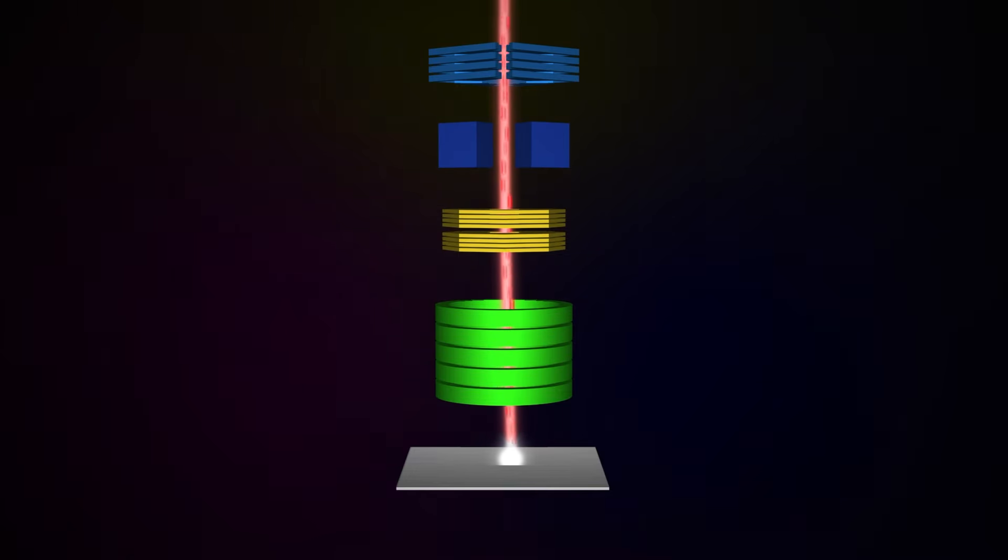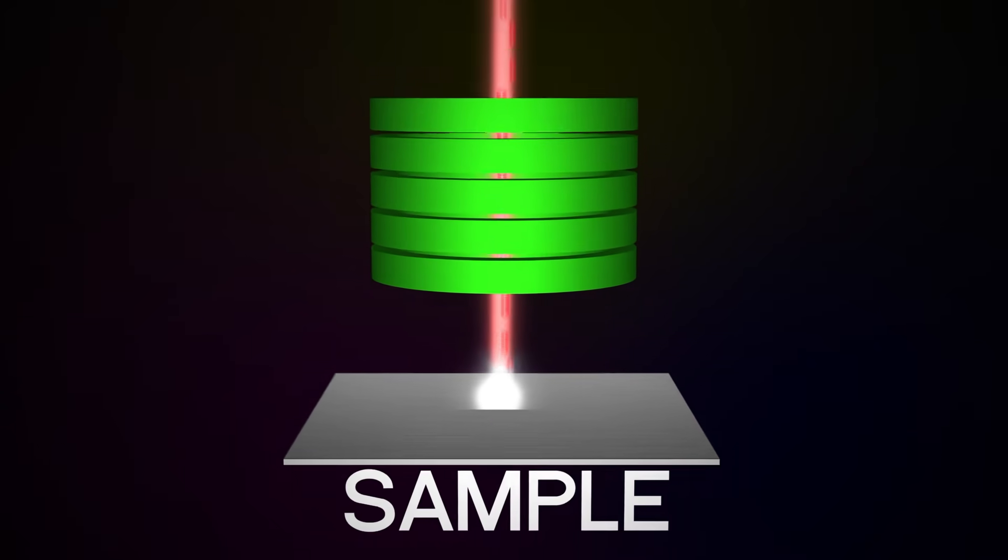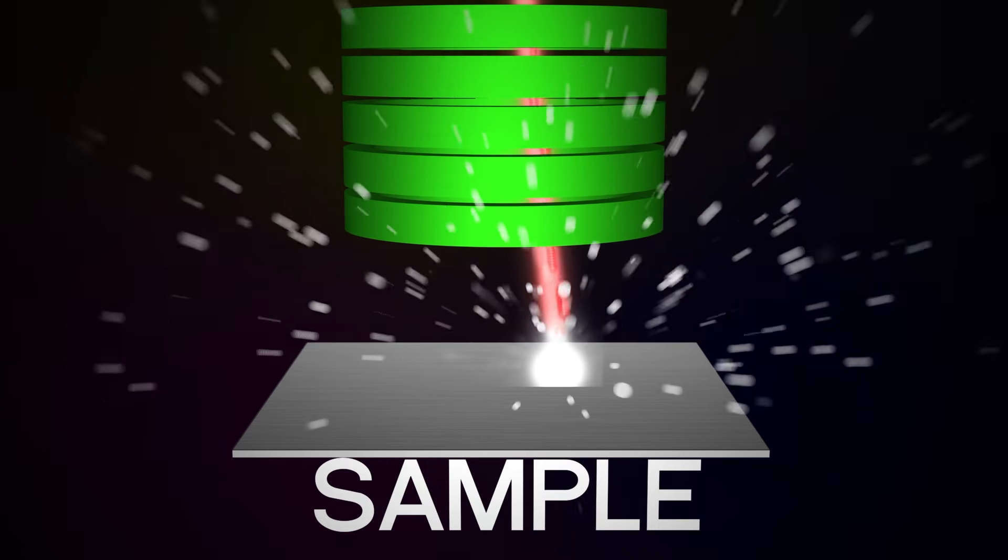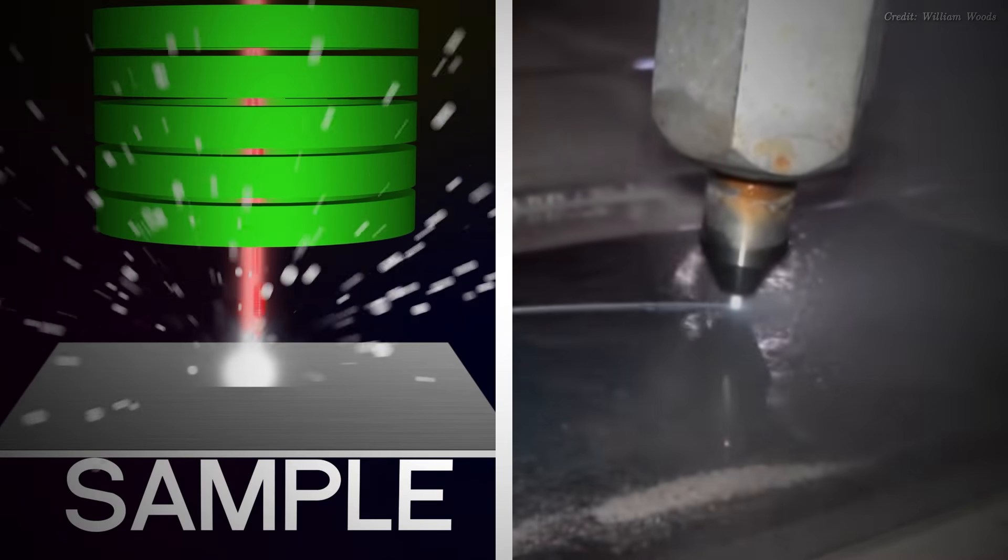The beam then enters another vacuum chamber where the sample is placed and scans it with the help of additional electric fields. The ions bump into the sample surface, removing and displacing some of its atoms, almost like a water hose cutting through sand.